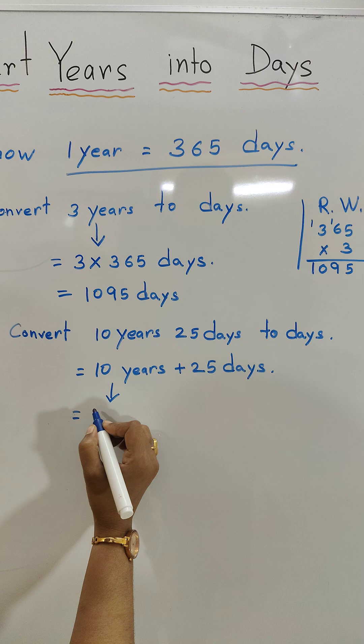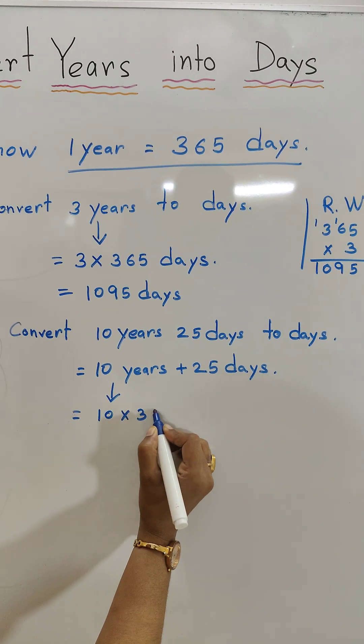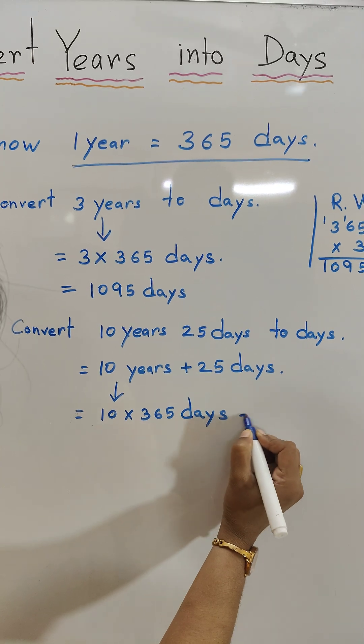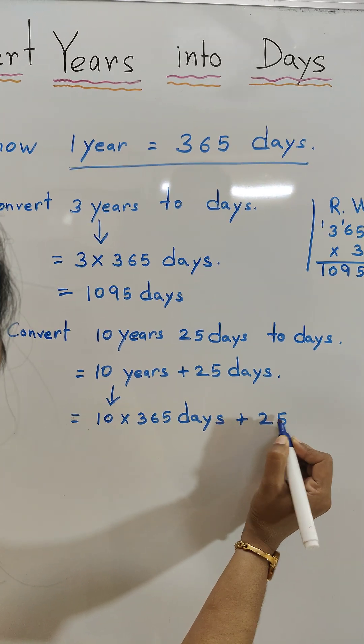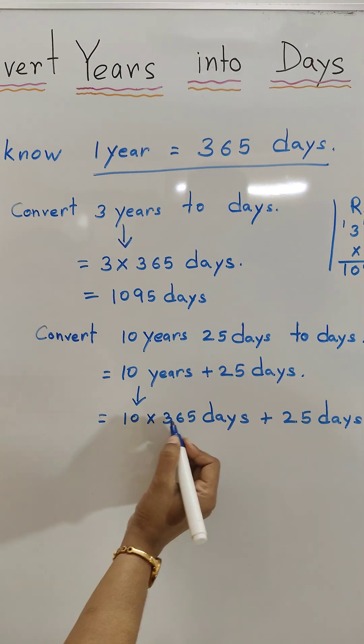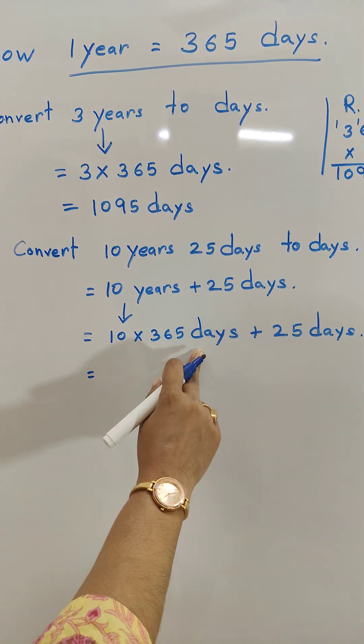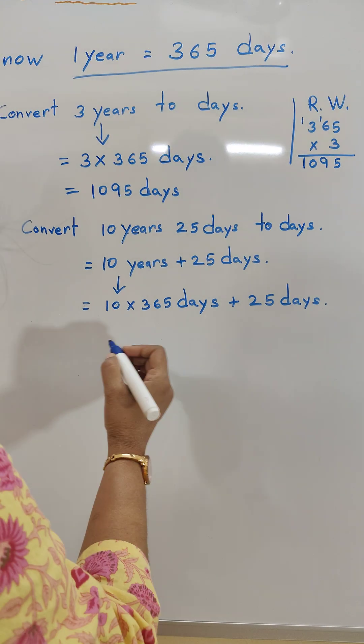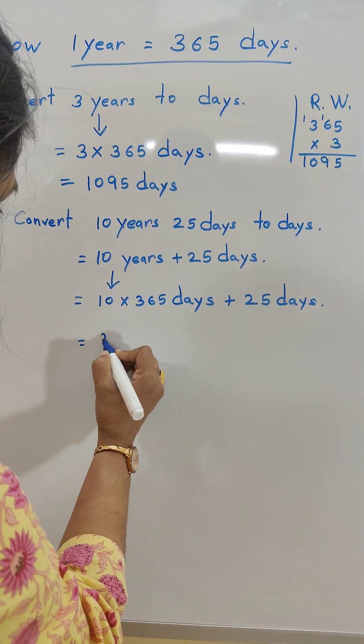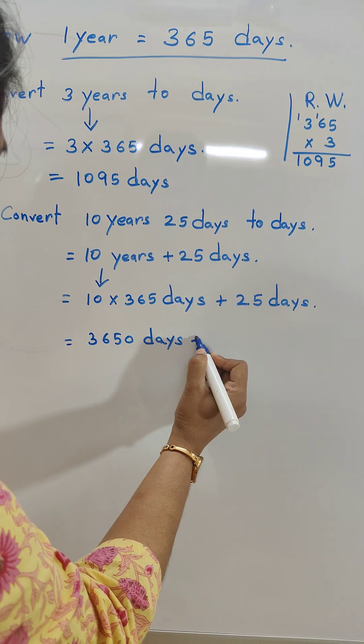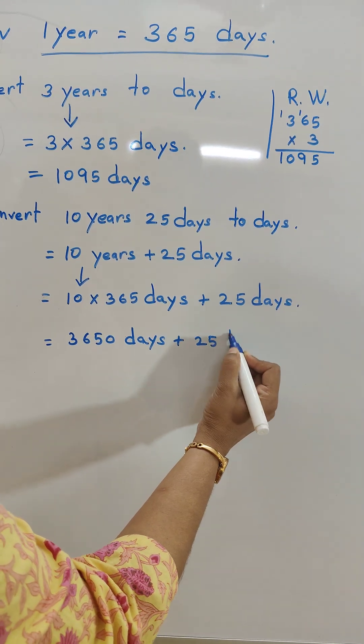So 10 years is equal to 10 times 365 days plus 25 days. We can do the multiplication easily. 10 times 365 days is equal to 3650 days plus 25 days.